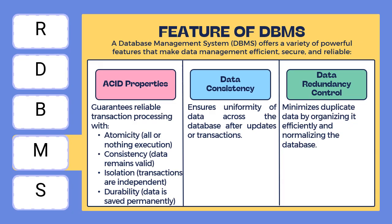For example, if you are transferring money from account A to account B, and the debit happens but the credit fails, the system will cancel the debit too. Consistency ensures the database goes from one valid state to another valid state — all integrity constraints and rules must be satisfied after a transaction. If a transaction violates a primary key or foreign key rule, it won't be committed.